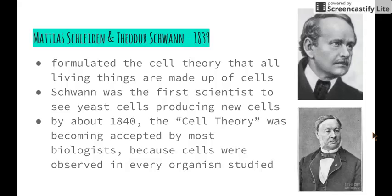We then have Matthias Schleiden and Theodor Schwann in 1839. They formulated the cell theory that all living things are made up of cells. Schwann was the first scientist to see that yeast cells produced new cells — they didn't just come from anywhere; a yeast cell had to be present for more yeast cells to come about. By about 1840, the cell theory was becoming accepted by most biologists, because cells were observed in every organism that was studied.